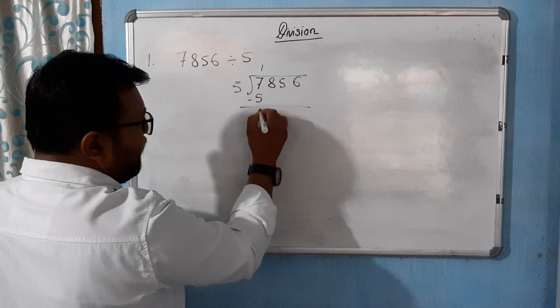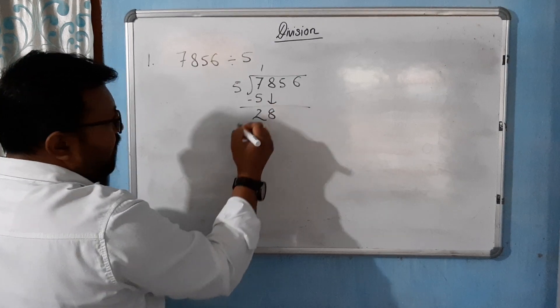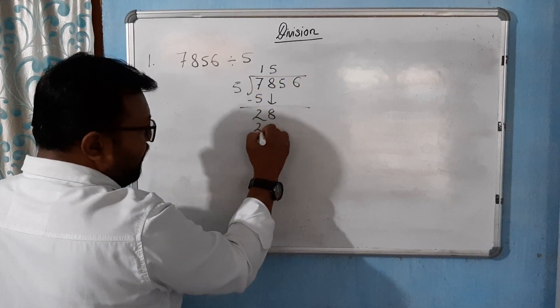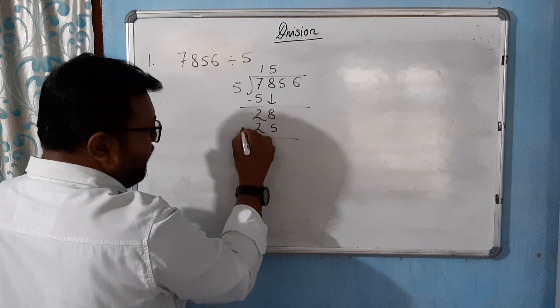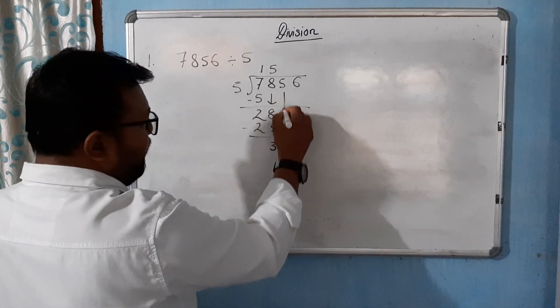5 into 7 is 1, 0, 5. Subtract, 2 will come. Here it is 8. 5 into 28 is 5, 0. 25. Subtraction, 3.